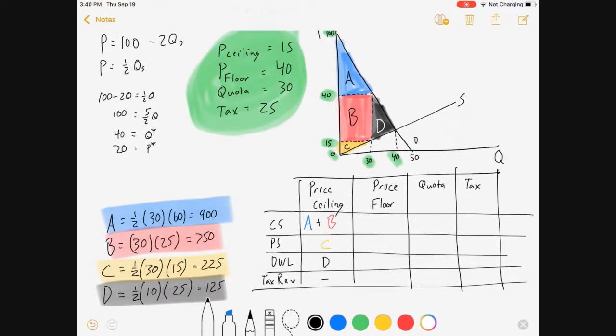If there's a price floor, the consumers still get A, but B gets transferred to the supplier who gets B and C. The deadweight loss is still D and there's still no tax revenue. A quota looks exactly the same as a price floor, at least as far as me measuring consumer and producer surplus.